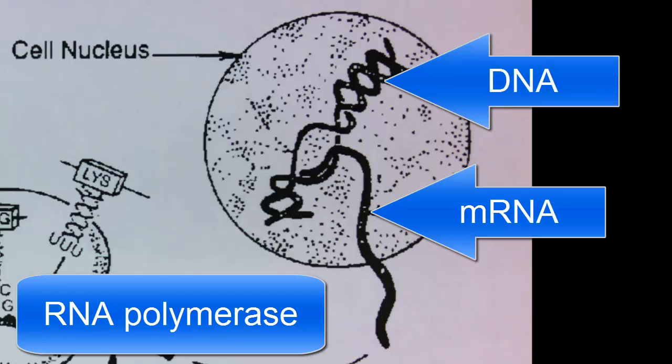The DNA unzips, exposing a gene, and the RNA polymerase copies one strand by making a messenger RNA molecule.